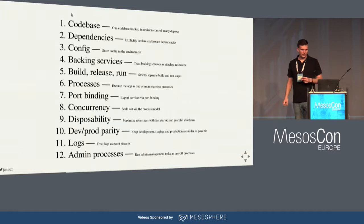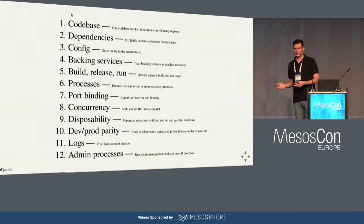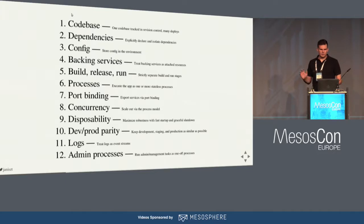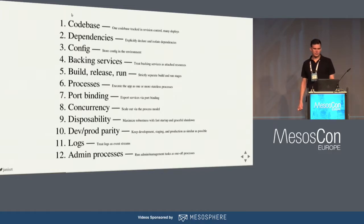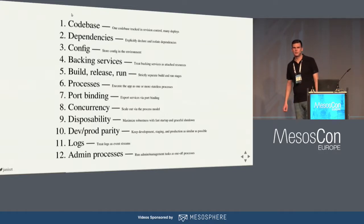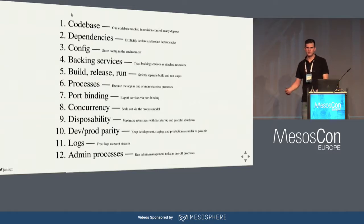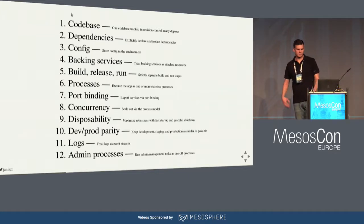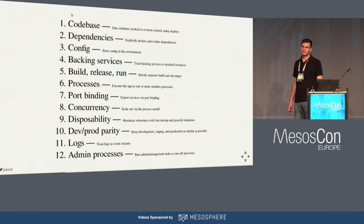Backing services: if the application requires something like Tomcat, it should be embedded within the application. Build, release, and run: the steps should be separated — executor won't help us here. Processes: the application should use one or more processes; in theory the executor could help scale single-threaded apps by running additional processes, but Mesos does not currently support changing resources on the fly. Port binding: applications should expose services via a port — easy to achieve in the Mesos ecosystem.